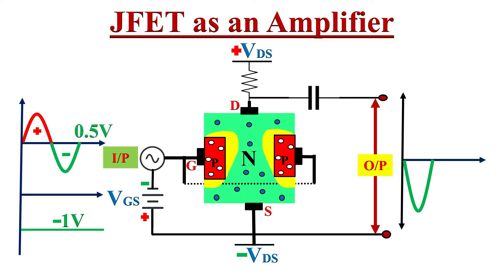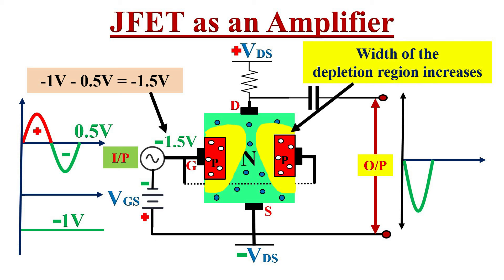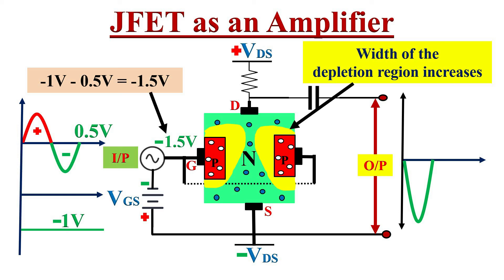During the negative half cycle of the input signal, the reverse bias on the gate increases — VGS changes from minus 1 volt to minus 1.5 volts. Due to this, the width of the depletion region increases, hence the current flow in the channel decreases and drain current decreases. Due to this increase in depletion region, channel resistance is very high, hence the negative voltage is unable to reach the drain terminal. Now the drain is positive with respect to source, resulting in a positive-going signal available at the output through the resistor and capacitor.